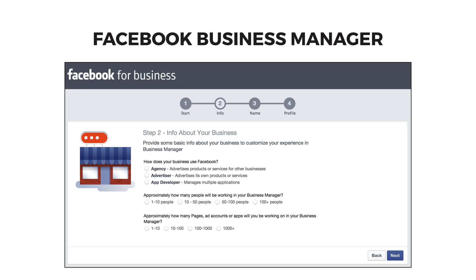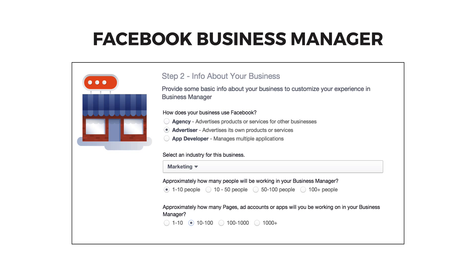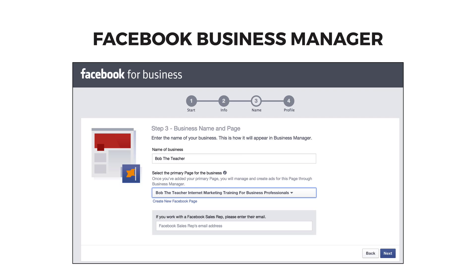First, choose how your business uses Facebook — whether you are running other businesses' advertising campaigns, running your own accounts' ads, or managing multiple applications. If you are advertising your own products, select the category of your business, then let Facebook know how many people will manage pages in your account and how many pages, ad accounts, or apps you'll be managing. You can always change this information later.